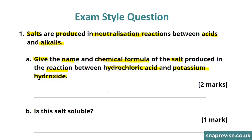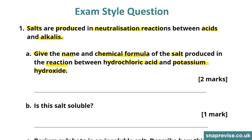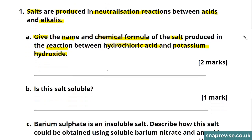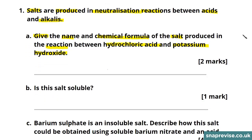This is an example of a neutralisation reaction between hydrochloric acid and the alkali potassium hydroxide. The name of the salt produced in this type of reaction always follows a standard pattern. The first part of the name comes from the metal present within the alkali — so here we're using potassium hydroxide, and we're therefore going to form a potassium salt.